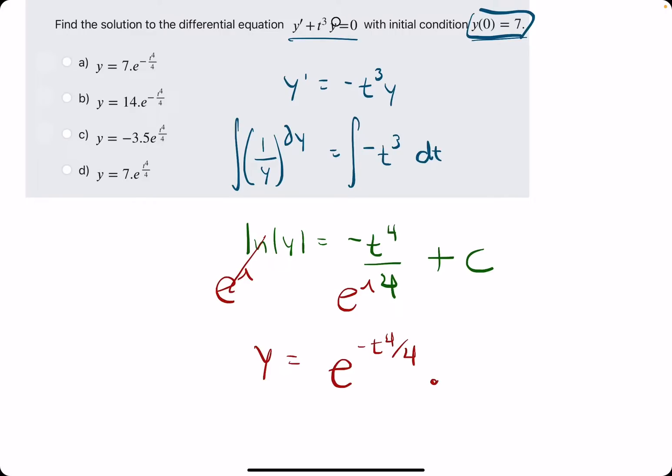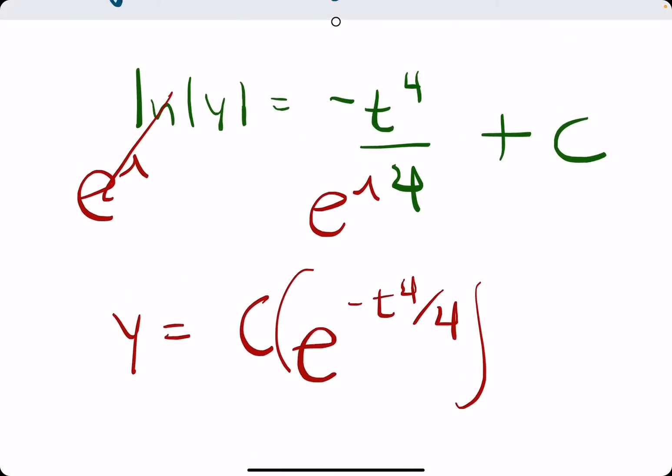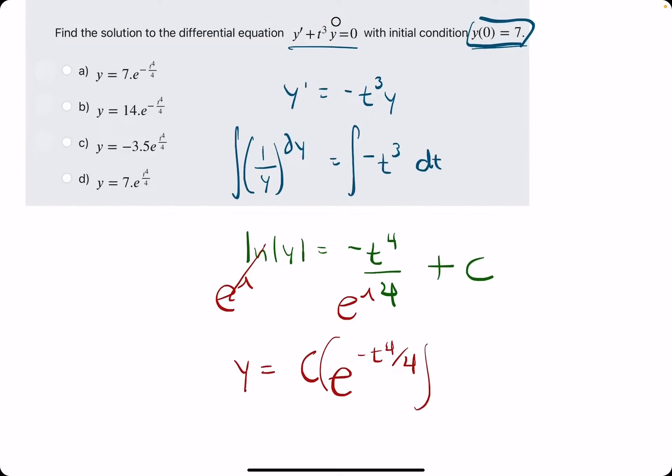and then plus c in the exponent. We could break that up as this e term times e to the c, where e to the c is just some constant. And so we'll go ahead and throw that constant out in front. So we have y equals this c e to the negative t to the fourth over four.